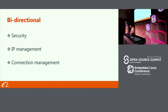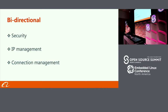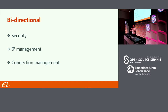Bidirectional communication gives us certain benefits. For IoT devices, security is huge — when you listen to a port, there will be attacks; when you don't, you don't have that attack. And IP management is hard for IoT devices and even edge devices. But above all, it's great for connection management — you don't have to worry about upstream or downstream connection, it's one connection. That's the power of RSocket.